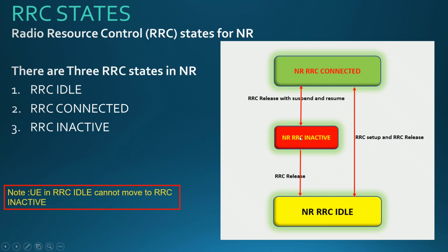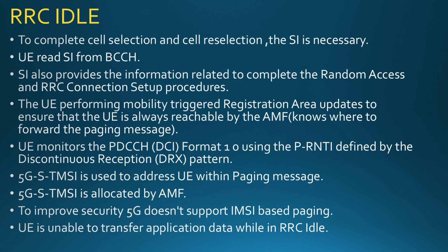Regarding RRC Inactive: from the inactive state, the UE can move to RRC Connected or to RRC Idle — both transitions are possible. The key point is that when the UE is in RRC Idle, it cannot go to RRC Inactive mode. So whenever the UE is in RRC Idle, it will never move directly to RRC Inactive.